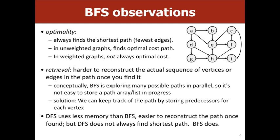Some good observations about BFS: it always finds the shortest path in terms of number of edges, which for unweighted graphs is the optimal cost. However, as we'll see with Dijkstra's, for weighted graphs this might not be the least cost path. Depth-first search uses less memory because it doesn't have the whole queue, and it's easier to reconstruct the path, but BFS finds the shortest path — those are trade-offs to consider.